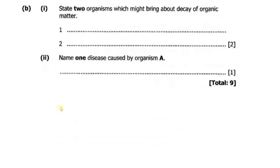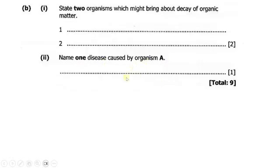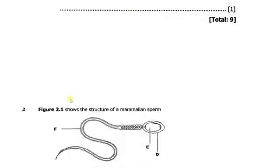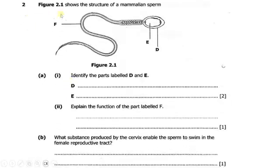Part B, number 1: state two organisms which might bring about the decay of organic matter. Part B, number 2: name one disease caused by organism A. Then we move to question number 2: figure 2.1 shows the structure of a mammalian sperm.